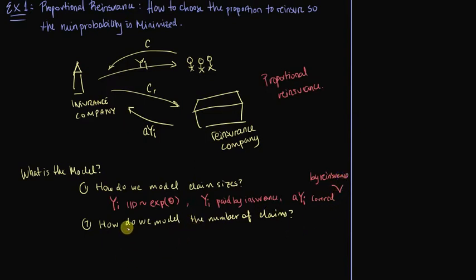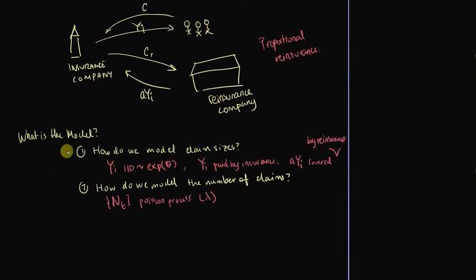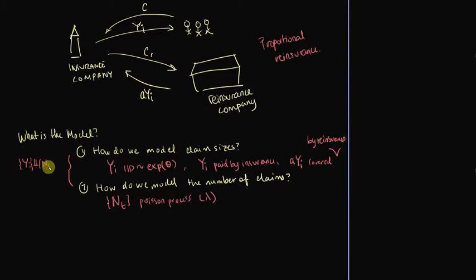How do we model the number of claims? The number of claims is modeled by N, which is a Poisson process with arrival rate lambda. In the model, which for the claims itself is a Cramér-Lundberg model, the Y_i are all independent of the claim number process as well.